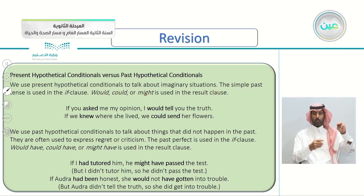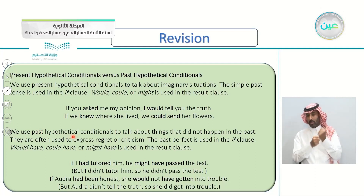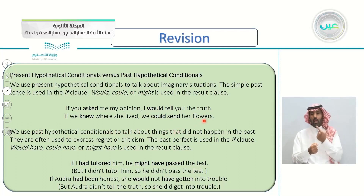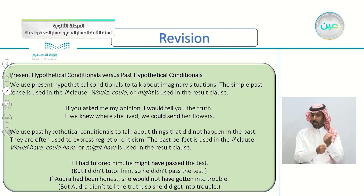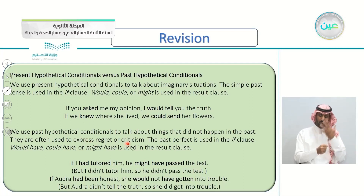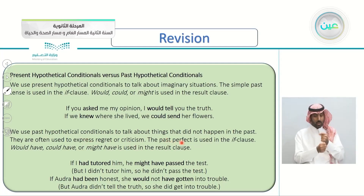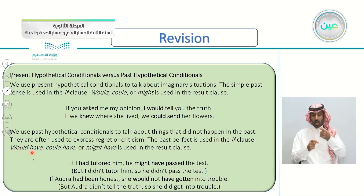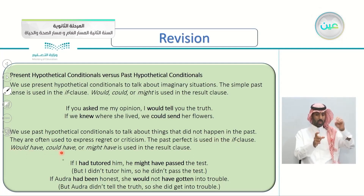On the other hand, in the past hypothetical conditionals, we use it to talk about things that did not happen in the past — things that did not happen. We use it often to express regret and criticism. We use the past perfect in the if clause, and in the result clause we use would have, could have, or might have.